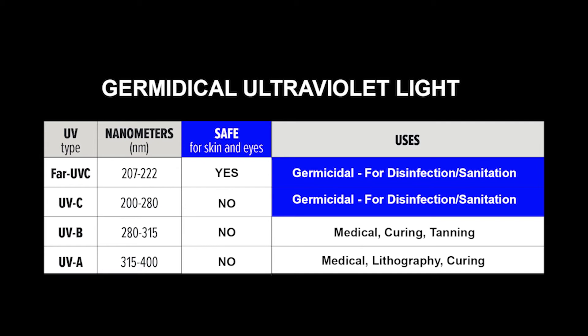Each type of UV has its own uses and effects. Some UV is used for disinfecting but is harmful to human skin and eyes, while a slightly weaker UV is just as effective at disinfecting but is not harmful to humans.